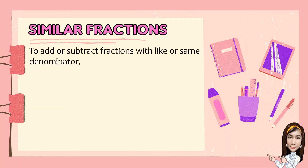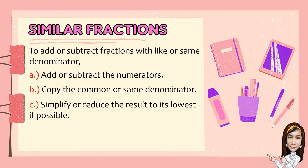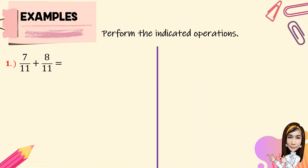To add or subtract fractions with like or same denominators: first, add or subtract the numerators; second, copy the common or same denominator; third, simplify or reduce the result to its lowest terms, if possible. Given A over B plus C over B is equal to A plus C over B. Similarly, A over B minus C over B is equal to A minus C over B. Now, for you to understand, let's have the following examples.